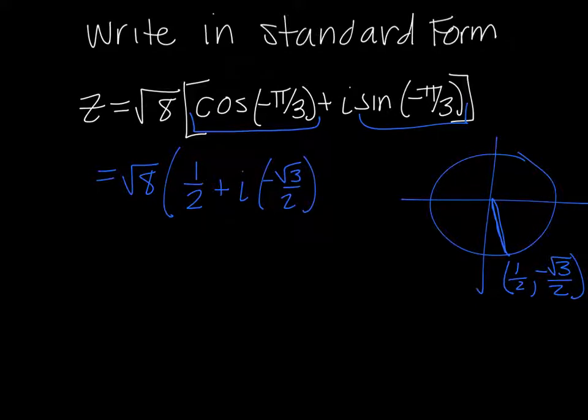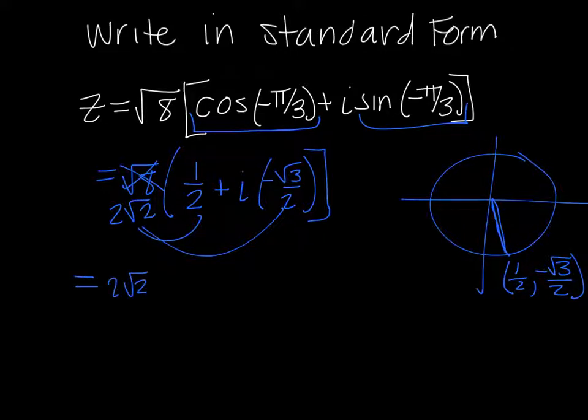And then our job is to multiply through by the square root of 8, which, by the way, is 2 square roots of 2. So I need to take that and multiply it through. So now I have 2 square roots of 2 times one-half, plus i times 2 square roots of 2 times negative square root of 3 over 2.